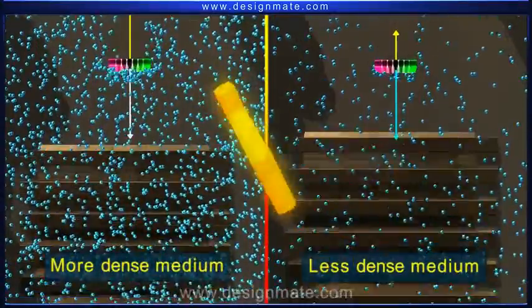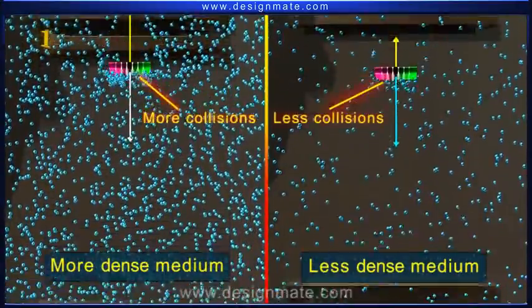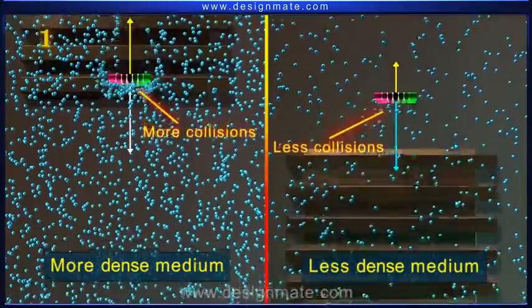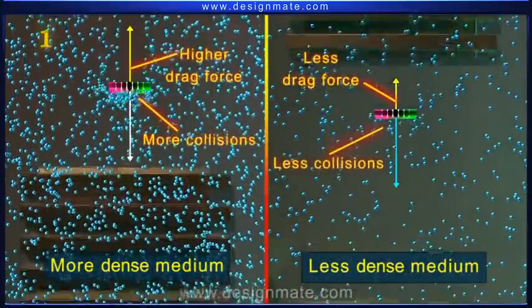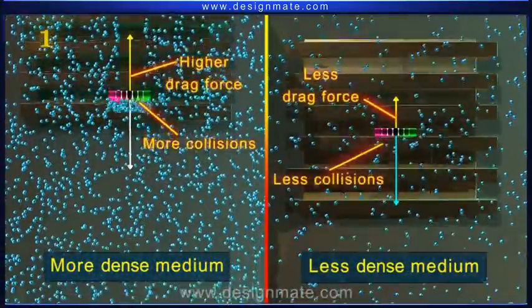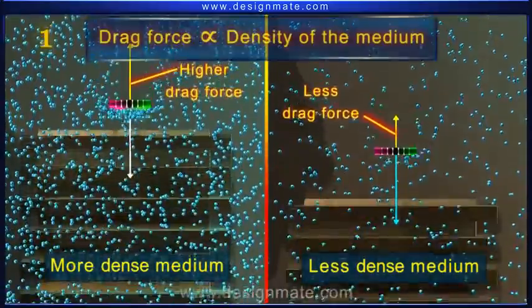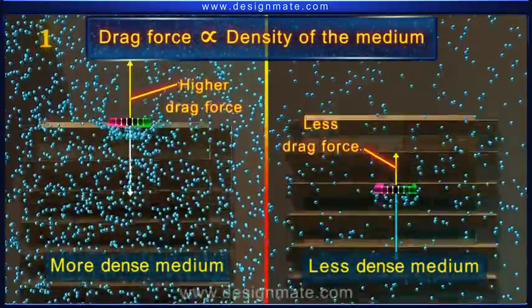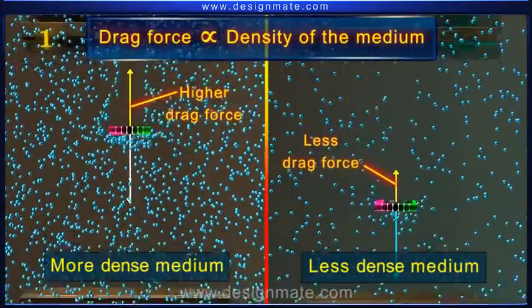A denser medium has more air particles which increase the probability of collision with the falling body resulting in a higher drag force. Thus, the drag force acting on an object is proportional to the density of the medium through which the object is moving.